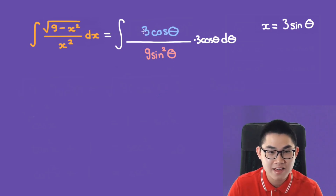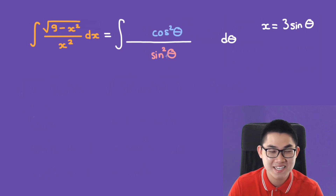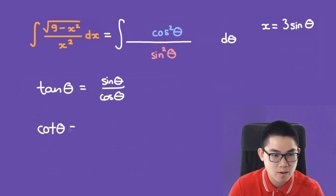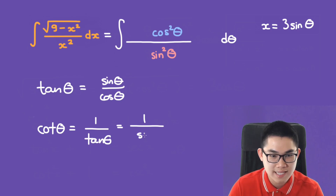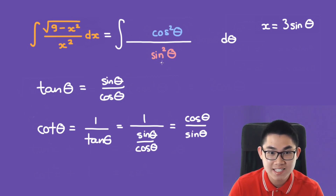Multiplying 3cosθ by 3cosθ from dx gives 9cos²θ in the numerator. The 9s cancel, leaving cos²θ over sin²θ. Since cotangent = cosine/sine, this whole expression equals cot²θ.